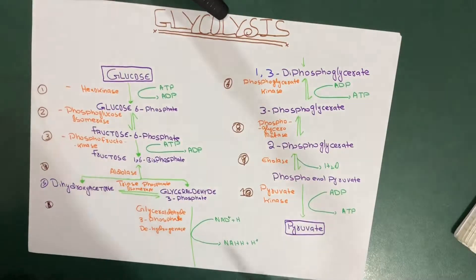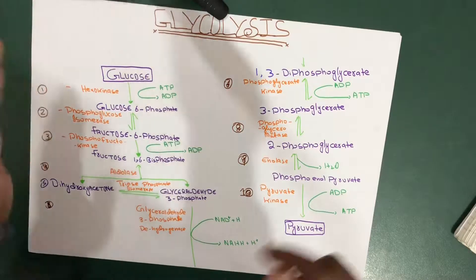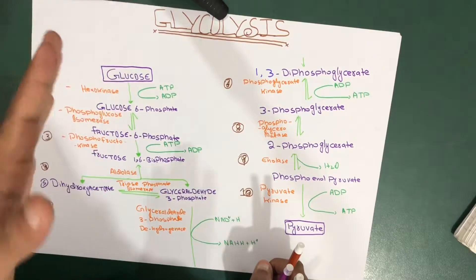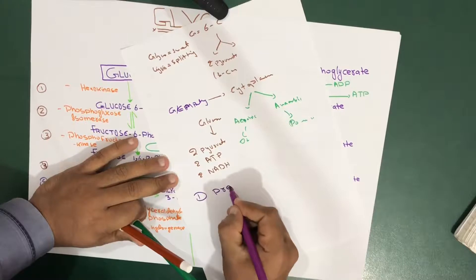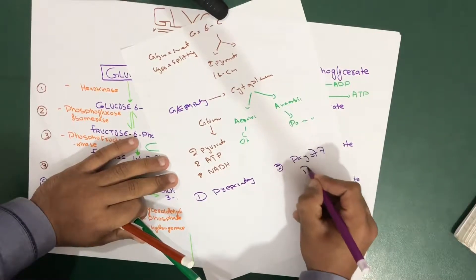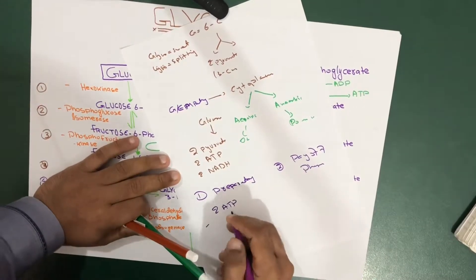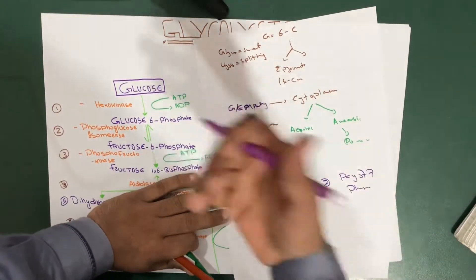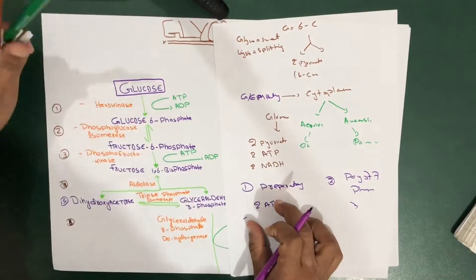Glycolysis is divided into two phases. The first is the preparatory phase, also called the glucose activation phase. The second is the payoff phase. In the preparatory phase we use two molecules of ATP to break the glucose molecule, but in the payoff phase we get that energy back.